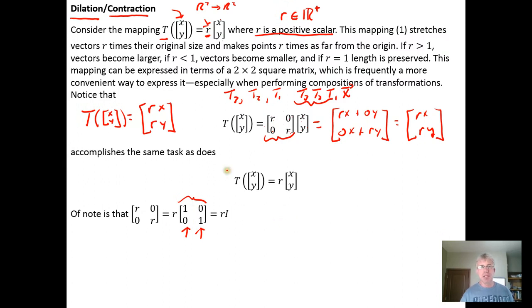And what we want to notice is that this idea would extend into higher dimensions. So for example, if I wanted to dilate or contract a vector in R3 by multiplying that vector in R3 by a positive scalar R.